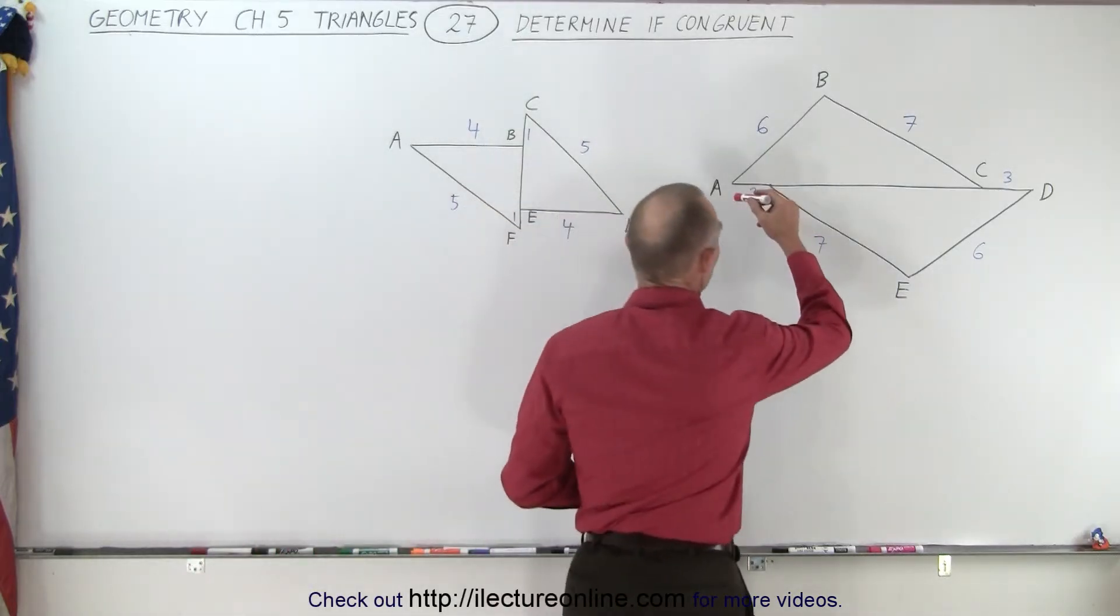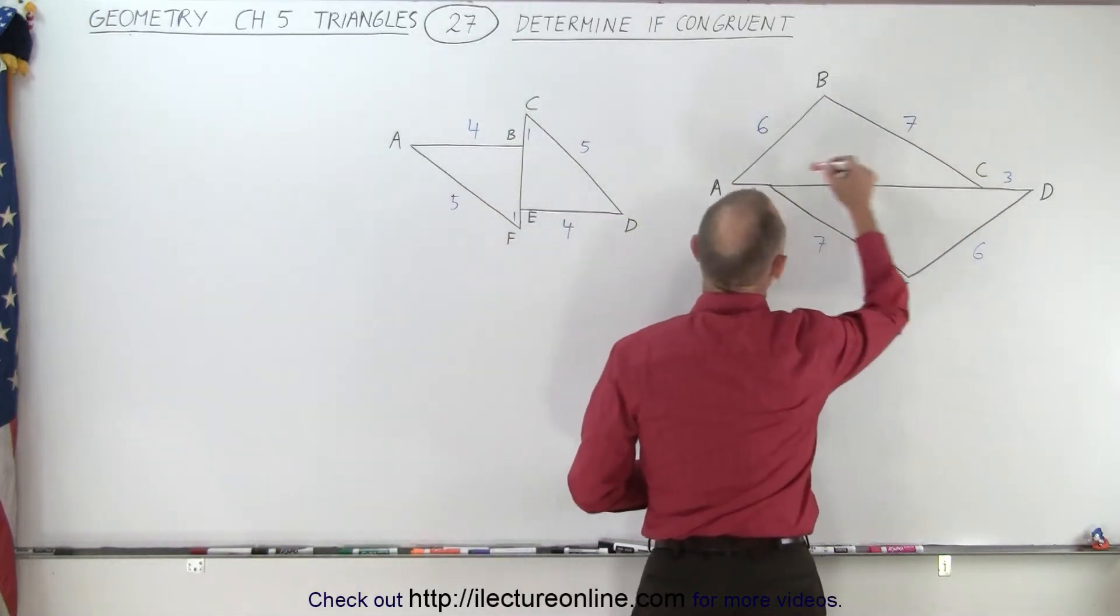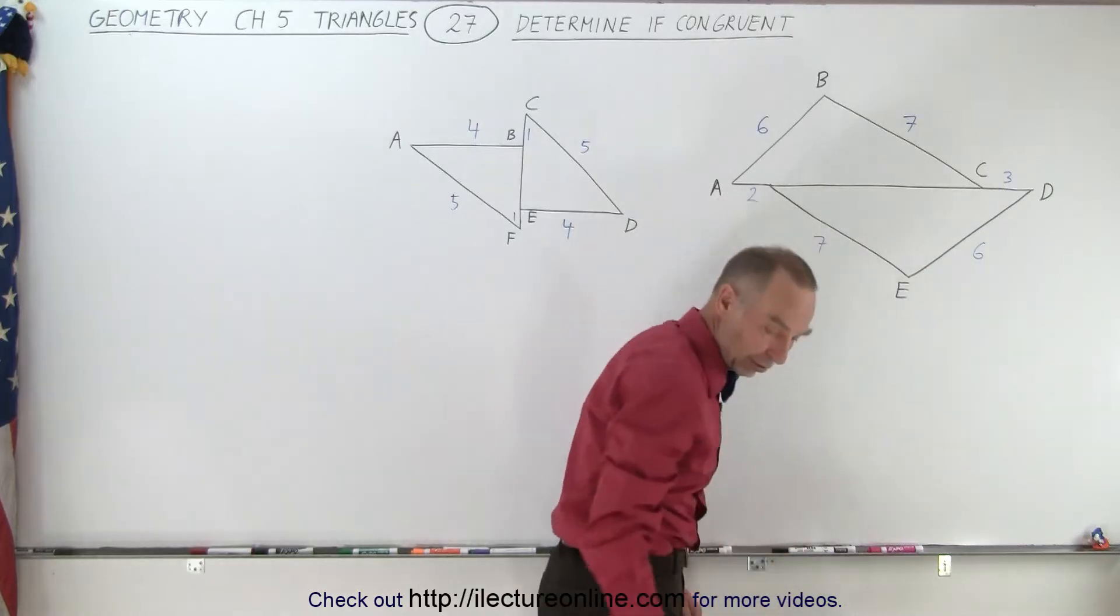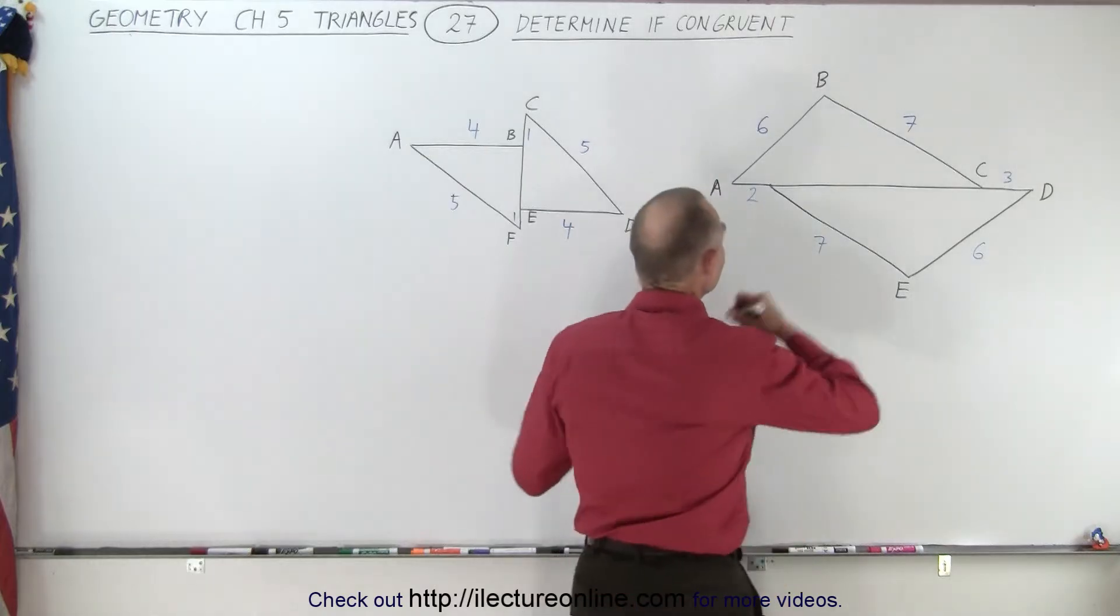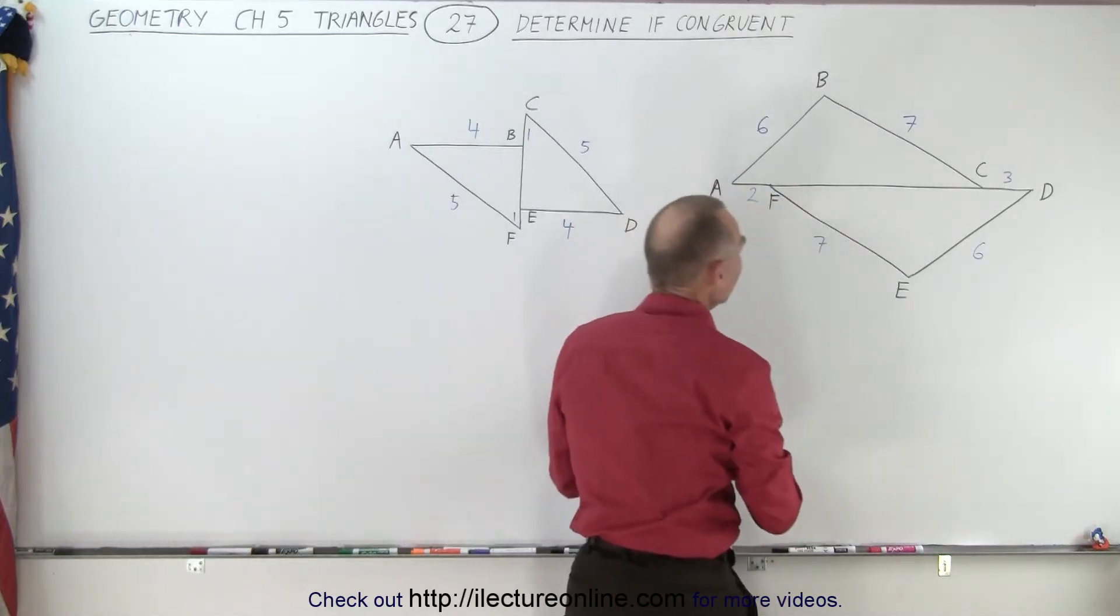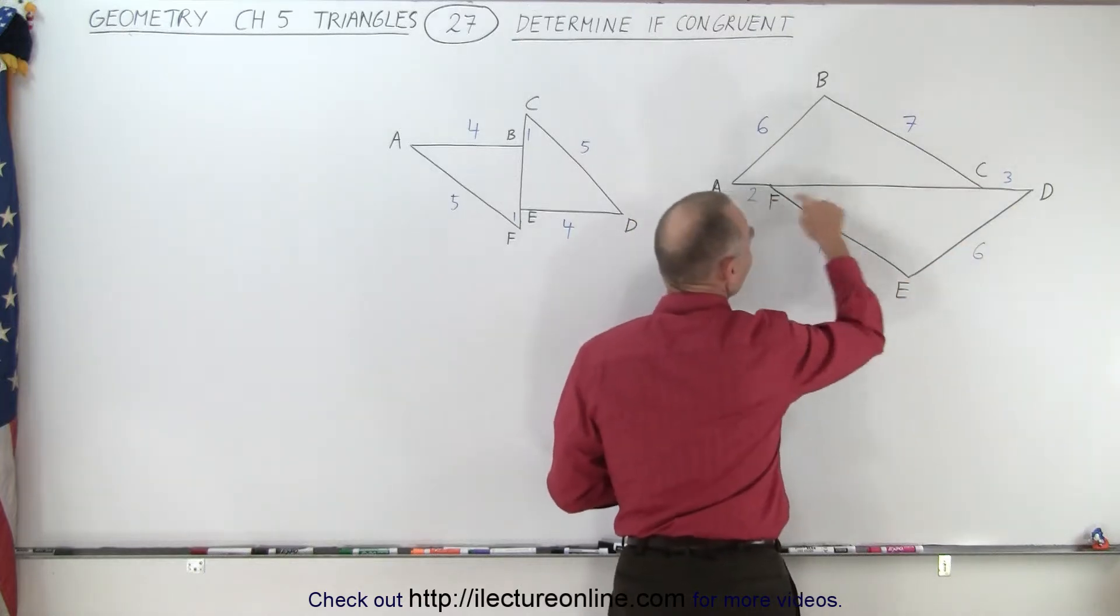So here we have the first triangle from A, B, C back to A, and the second triangle D, E, F. I guess I need another letter here to indicate this corner right there, so let's put an F there. So we have a second triangle that is D, E, F back to D.